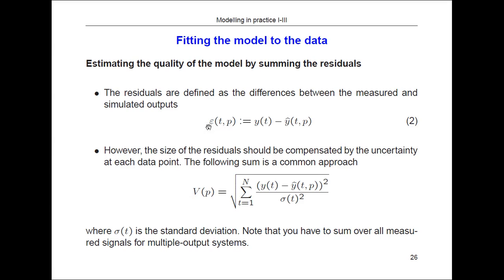The residuals give a point-by-point measure, but you want to get a sort of average value for all of these deviations. You get that by summing them, but in practice it's not a good idea to sum them directly. Instead you use a formula where the sum is part of it but you also do other things — and that gives the most common way of formulating a cost function.